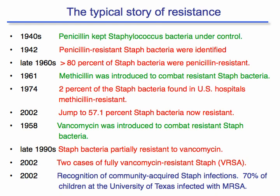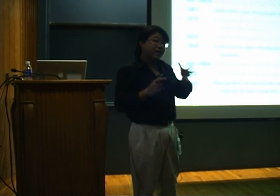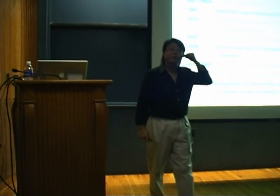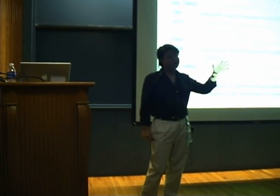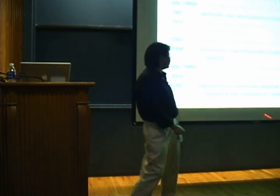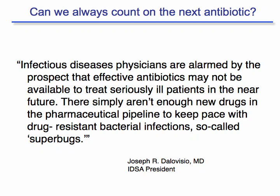By 2002, methicillin-resistant staph jumped to 57.1 percent. Luckily, vancomycin was introduced back in 1958, so we still had another option. But in the late 1990s, staph was identified as partially resistant to vancomycin, and by 2002 there were two cases of fully vancomycin-resistant Staph aureus. There are now outbreaks of MRSA in the community — starting among athletes and wrestlers in gyms, and one study at a University of Texas hospital found 70 percent of children were infected with MRSA. As the IDSA president recently said: effective antibiotics may not be available to treat seriously ill patients in the near future.